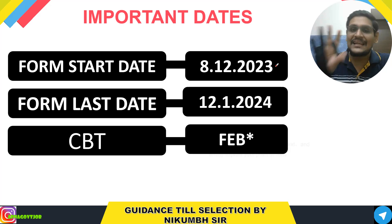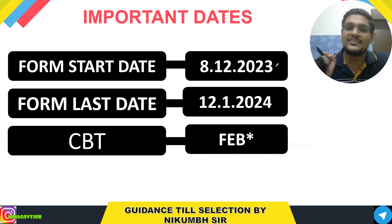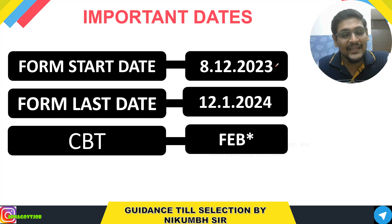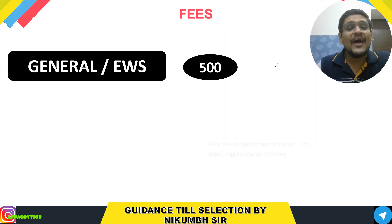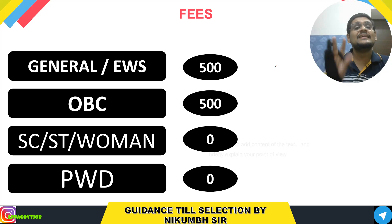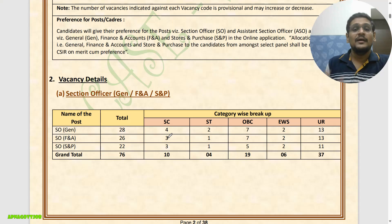The next video will be a form-filling video in which I will show you how to fill this form properly so that you will not face difficulty in document verification. Fees will be 500 rupees for General and EWS. For OBC, SC/ST, Women, and PWD candidates there is no fee. So let's break down the vacancies.